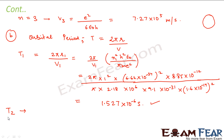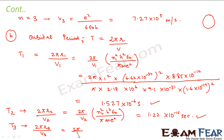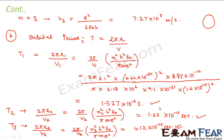Similarly, for n equal to 2, the orbital period T₂ equals 2πr₂ divided by v₂, which comes out to be 1.22×10⁻¹⁵ seconds. These are the orbital periods for n equal to 1, 2, and 3 energy levels respectively.